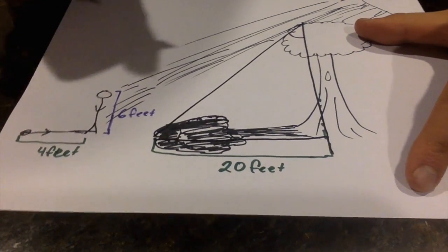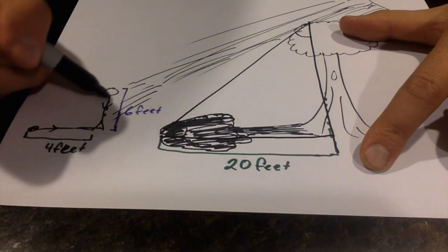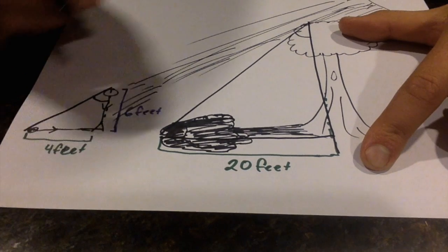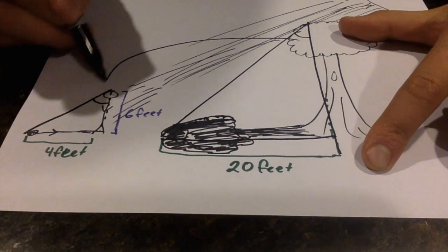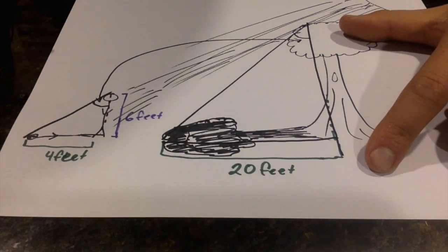This triangle is going to have a certain angle. We're also going to notice, given that it's coming from the same sun, we're going to have a triangle coming up through this person going to the end of that shadow, which is going to have the same degree.